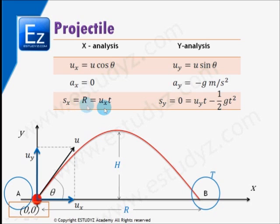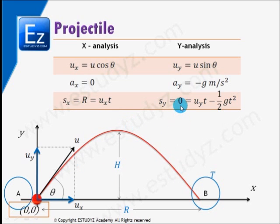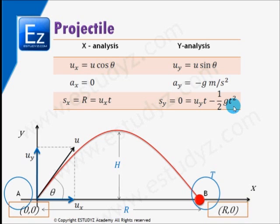Displacement along the x-axis is S, which is equal to r, the range of the projectile. This displacement equals ux multiplied by t, since there is no acceleration. Sy, the displacement of the projectile along the y-axis, is 0, which equals uy·t minus half g·t squared. This describes how the projectile goes from point A, the origin, to point B at coordinates (r, 0).